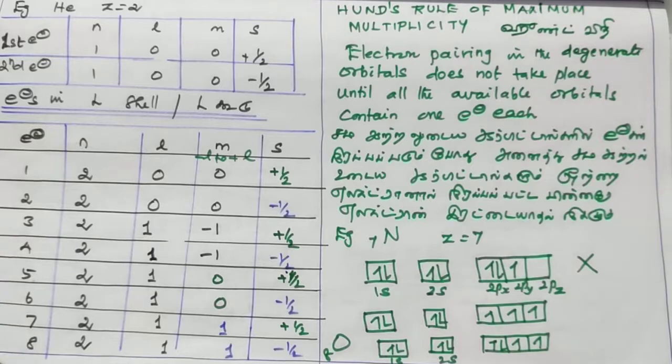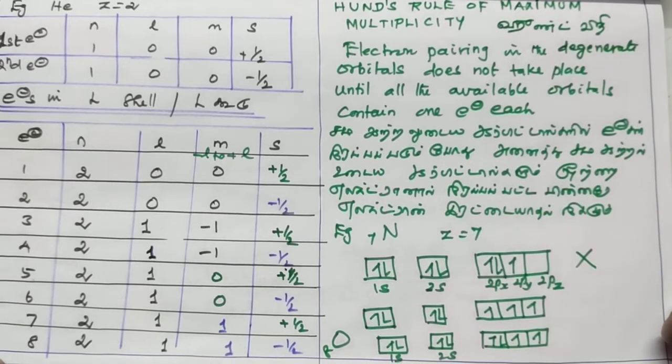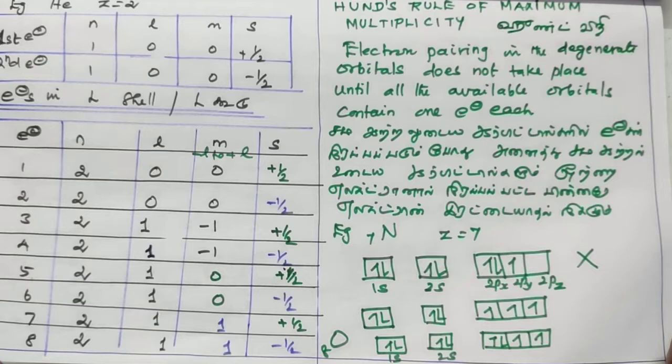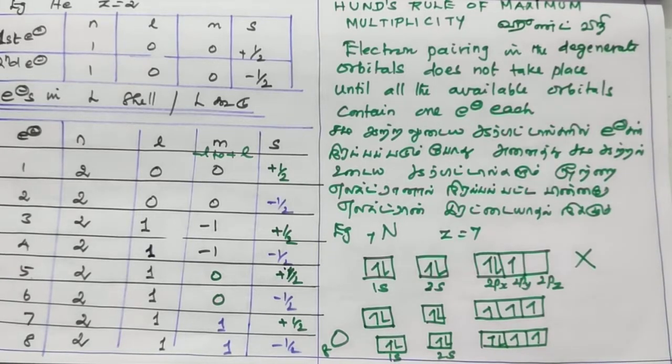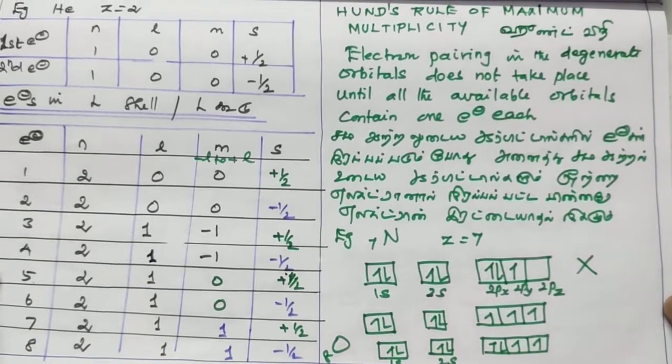First one, Hund's rule of maximum multiplicity. Electron pairing in the degenerate orbitals does not take place until all the available orbitals contain one electron each. First, degenerate orbitals. I am going to talk about degenerate orbitals with equal energy.